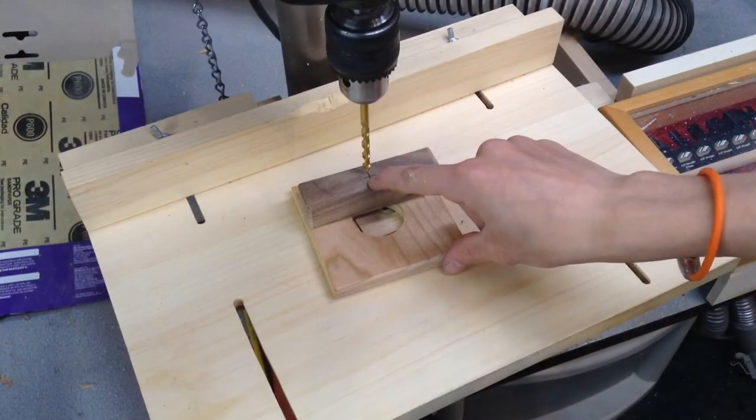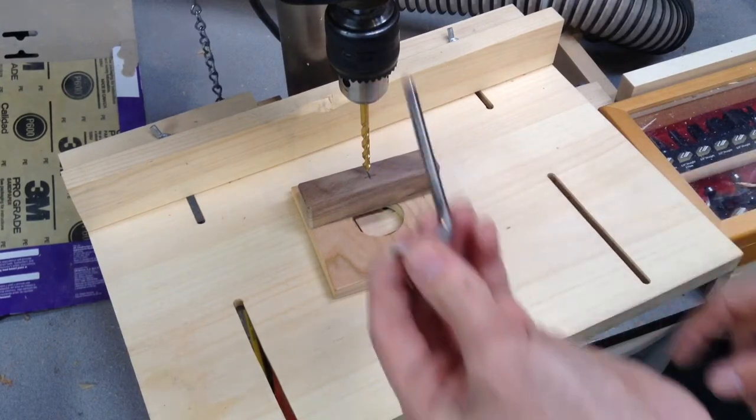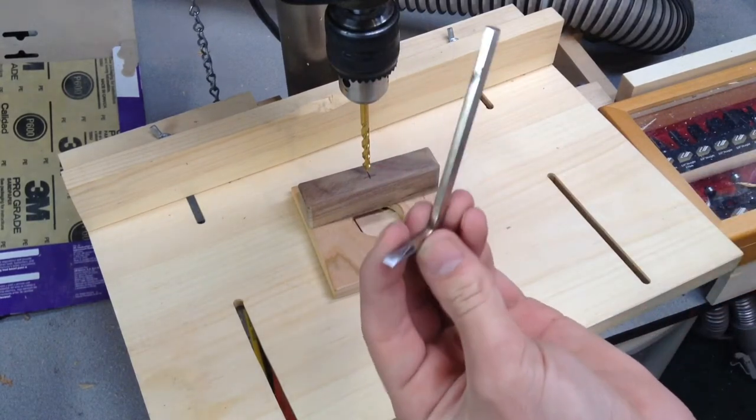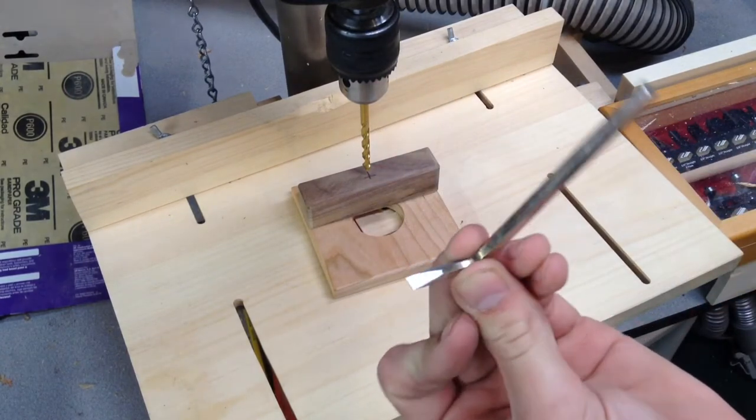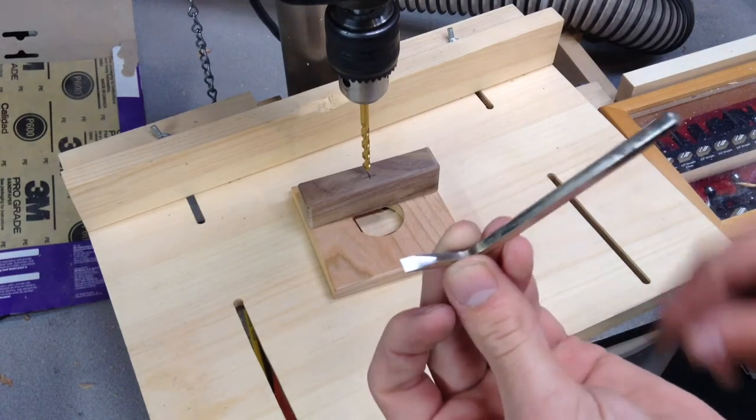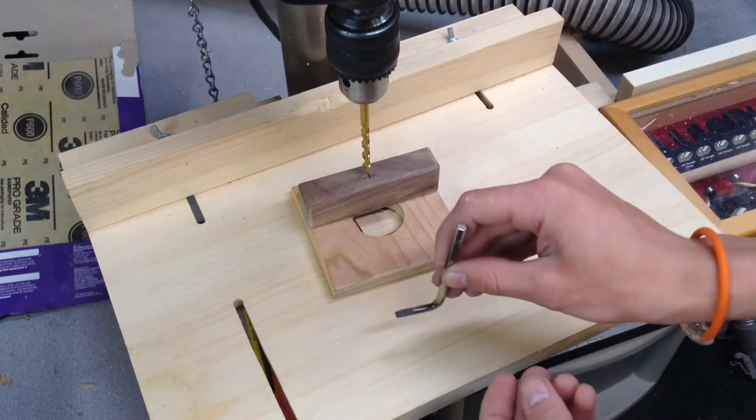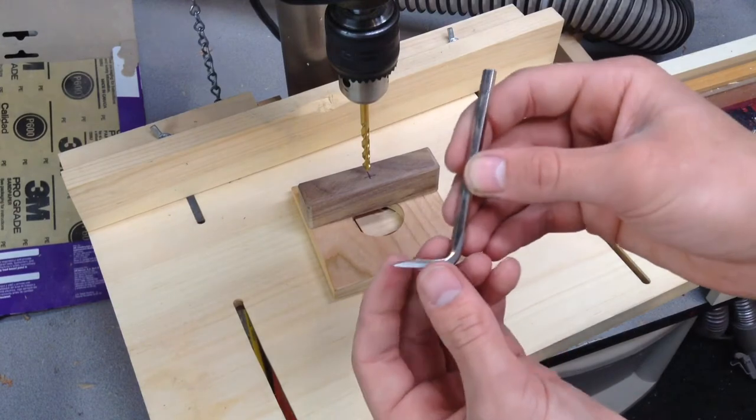Next I'm going to be drilling the hole through the handle here. And this is to accept this allen wrench which I have grinded down on the grinder to make this knife. That's going to be the cutting edge of our router plane.